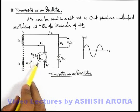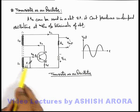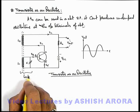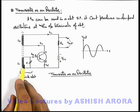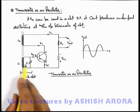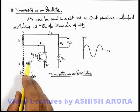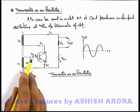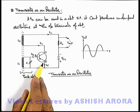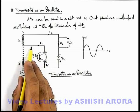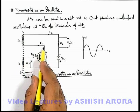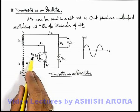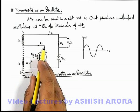Between the input terminals B and E, we have connected a tank circuit. This circuit produces oscillations, and due to the oscillations of voltage and charge in the tank circuit, the base current fluctuates. Due to this fluctuation in base current, the forward biasing of the base-emitter junction also varies periodically. Since LC oscillations are sinusoidal in nature, the base current will also vary sinusoidally, and the collector current will also vary sinusoidally.